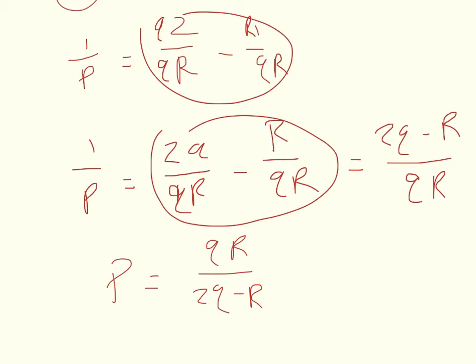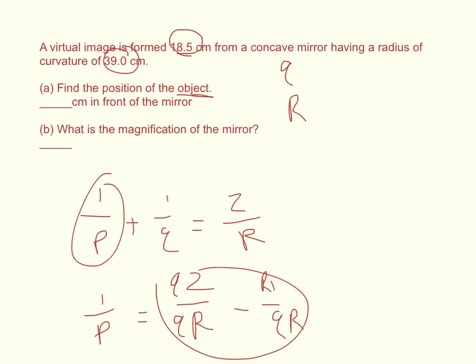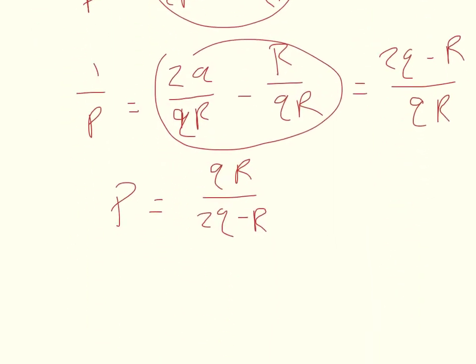Now before we go in and plug in any numbers, let's go back and look at the question again. It says a virtual image is formed. That means the image is formed, if it's a concave mirror, that means the image is formed behind the mirror. The light's striking here, but it appears that the image is coming from back here. So this means that Q is not 18.5, it's negative 18.5. And so we've got to remember that when you plug in Q.